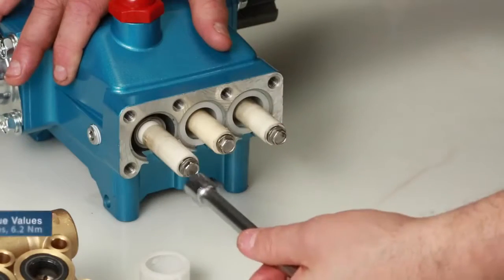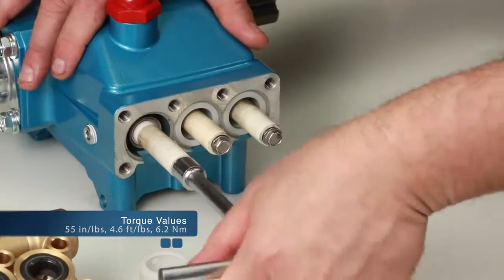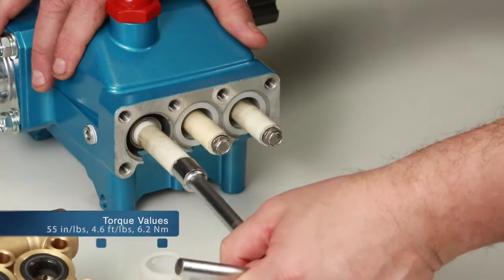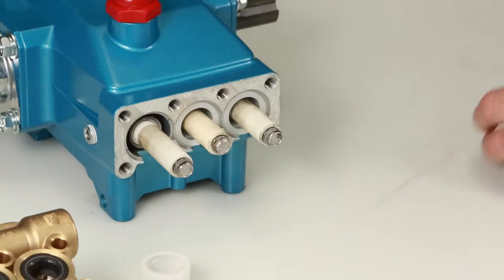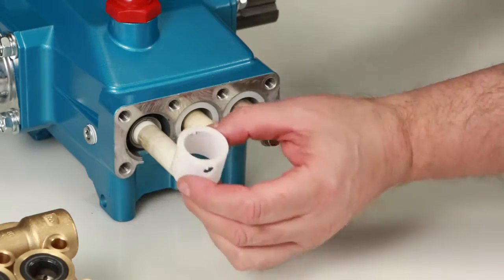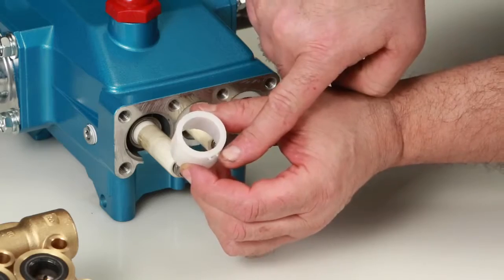Tighten using a 10mm wrench. Torque to specification. Install the seal retainer with tab facing down into the notch of the crankcase.